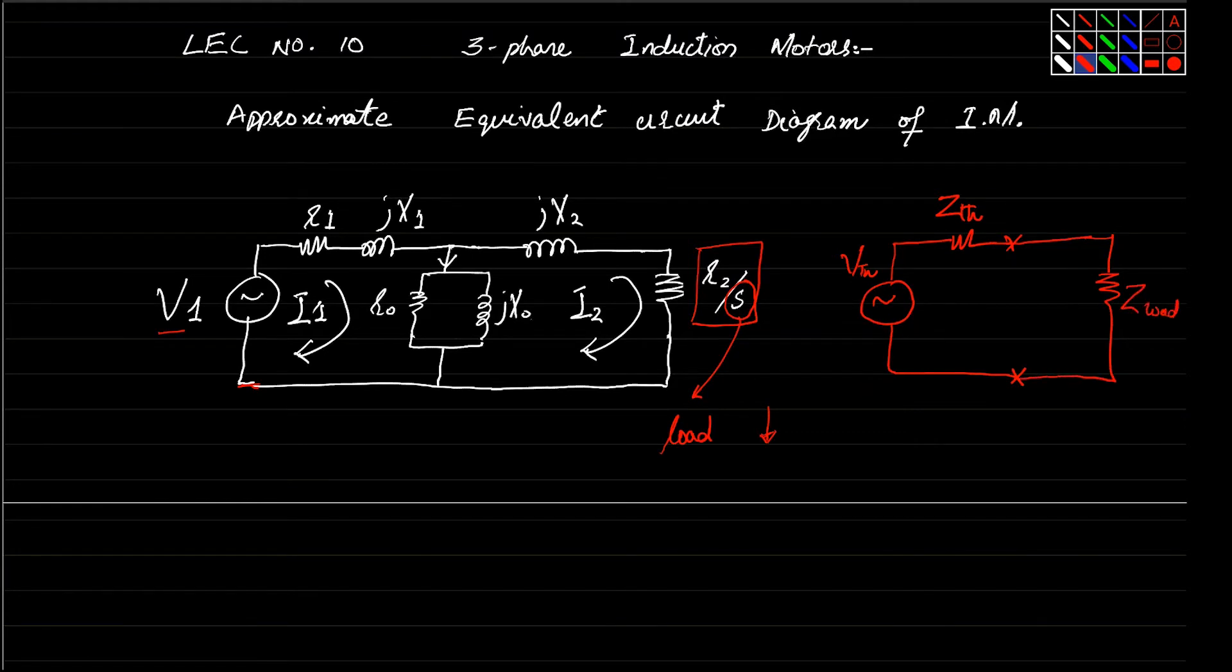And then you have the load side. In this case, this R2 by S we can consider it as Zload. We will cut our circuit at this point, removing all the sources to find out the Thevenin equivalent.